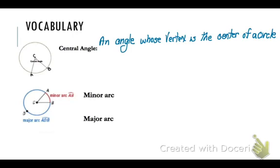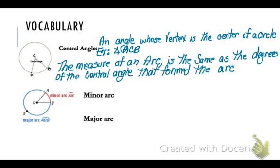A central angle is an angle whose vertex is the center of a circle. You can see from our diagram that angle ACB is a central angle because its vertex C is the center of the circle.